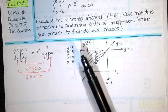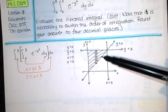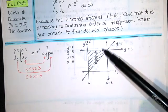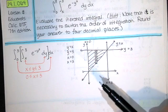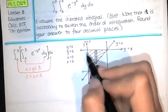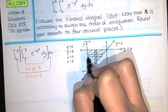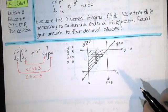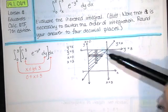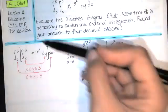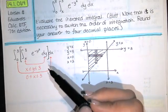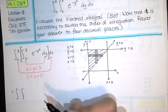So we have to do something else. Rather than thinking of y as going from a function to a function and x going from a constant to a constant, when integrating over this triangle, we could switch the order of integration. Rather than letting x go from a constant to a constant, we could let x go from a function to a function while letting y go from a constant to a constant. Drawing our rectangles horizontally, perhaps we will be able to evaluate that antiderivative on the inside — and I think we will, because e^(-y²) is constant with respect to x.